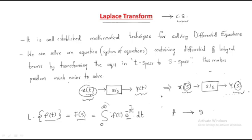This conversion is very important for solving equations in control systems. The Laplace transform is named after the scientist who discovered it. It transforms the t-domain into the s-domain, where s is nothing but jω. Whenever j is involved, complications arise, so we directly take jω as s.